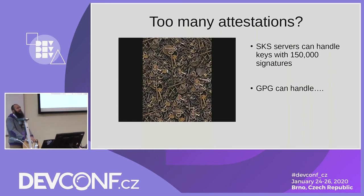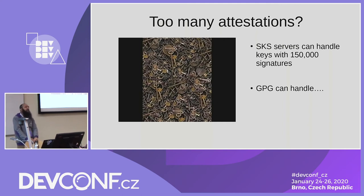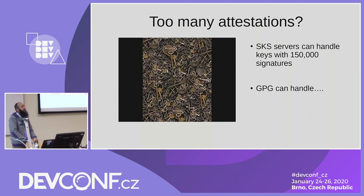The problem is that you can technically have a public key with too many attestations. It is possible to have a public key on the key server signed a very large number of times by many people. The key servers can handle up to 150,000 attestations, but GPG is not able to handle more than a few thousand. Most key servers on the internet are SKS servers. SKS is a very old software written by a PhD student for a thesis, written in OCaml. There are very few people who understand the code, it has not been maintained for a very long time, and nobody really wants to improve it.